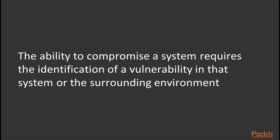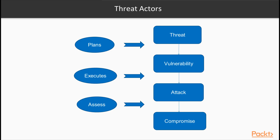Now let's talk about the act of compromising a system. The ability to compromise a system requires the identification of a vulnerability in that system or in the surrounding environment. Some threat actor imagines or identifies a threat to a system. The threat is based on a vulnerability that can be exploited. Given an identified vulnerability, the threat actor will plan and execute an attack against the system. If successful, this will result in the compromise of that system. Events do not stop here, however. Often times, once an attacker gains access to a system, they can pivot to lateral or higher value systems within an enterprise.